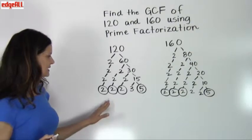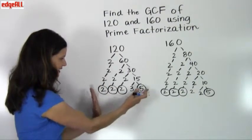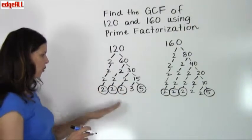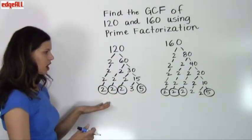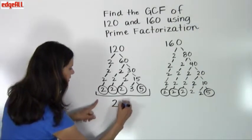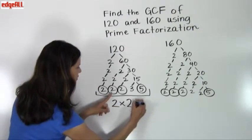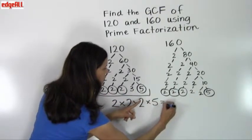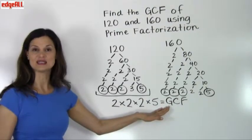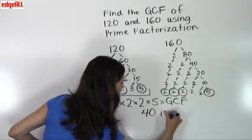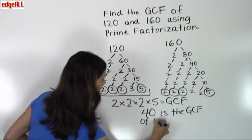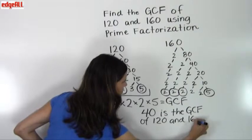I take one representative set of the circled common prime factors and write out the multiplication: 2 times 2 times 2 times 5 equals my greatest common factor. So 2 times 2 times 2 is 8, times 5 is 40. Therefore, 40 is the greatest common factor of 120 and 160.